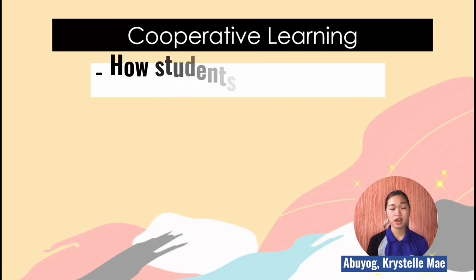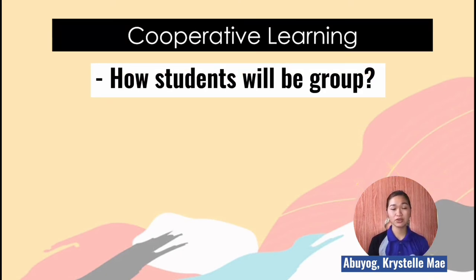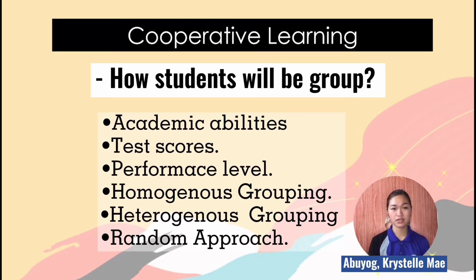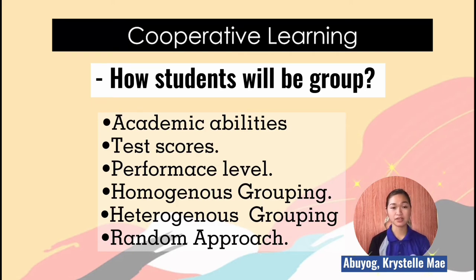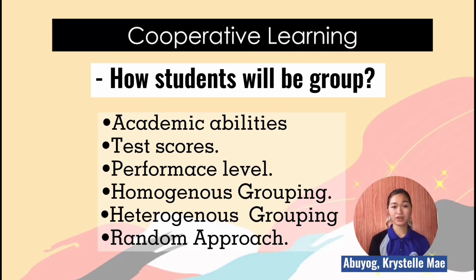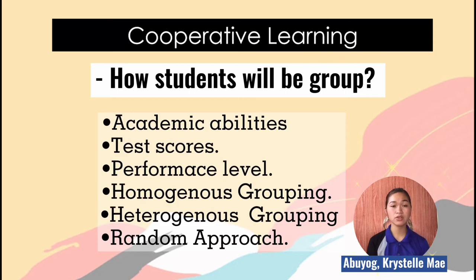A common question is: how will students be grouped? The first thing to consider when grouping students is their academic abilities and test scores. Consider grouping students by their performance level. Homogeneous grouping places students with similar performance levels together, organized by ability. Heterogeneous grouping places diverse students in different groups so they can apply their skills more evenly — for example, students with learning disabilities alongside gifted students.